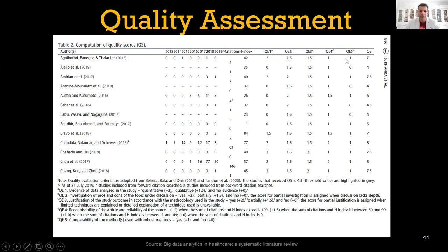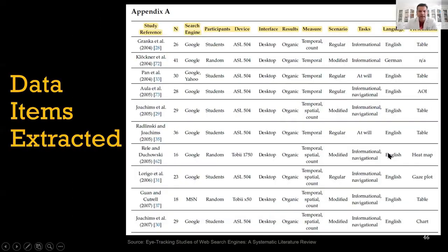Data extraction: an example of a data extraction table. You can see the references here, probably number of citations, where it was searched from, Google Scholar, who are the participants in the study, students, random participants, mostly students or non-students, what device was used for their study, what interface, desktop, what results they got, what did they measure, what was the scenario for the setup.